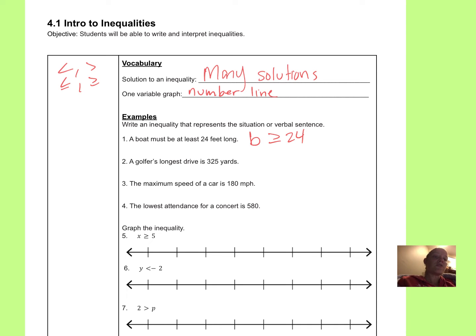A golfer's longest drive. So let's use maybe G for golfer. His longest drive is 325. So the absolute farthest he's ever driven it is 325. That means that everything else has been less than that. So less than that. But he did one time get it equal to that. So we want the equal to part also. We want to include this line underneath if that number is okay. We want that to be part of the solution. If we don't want that number to be part of the solution, that's when we have the open circle and that's when we have the no line underneath. It means that an answer is not included.